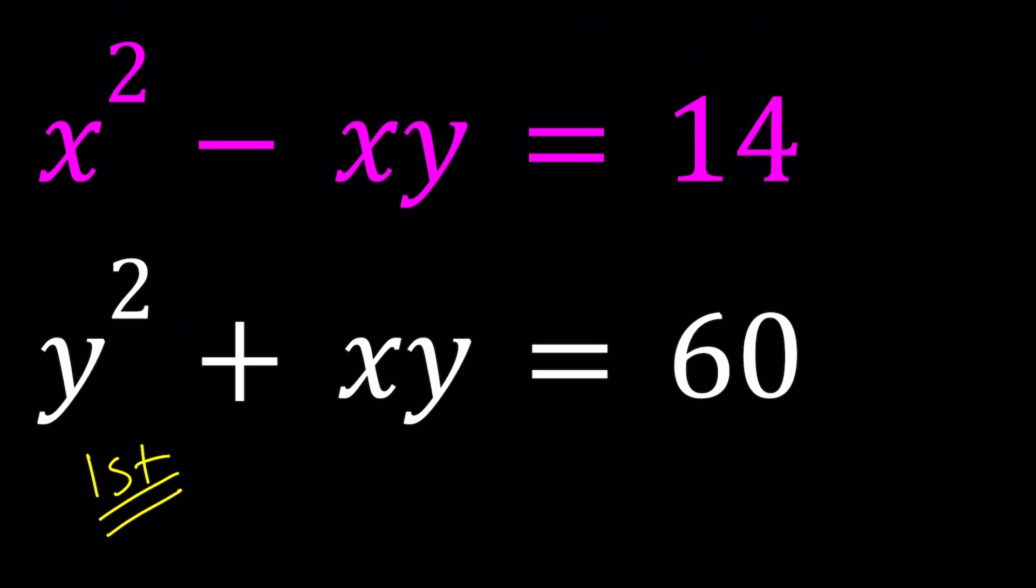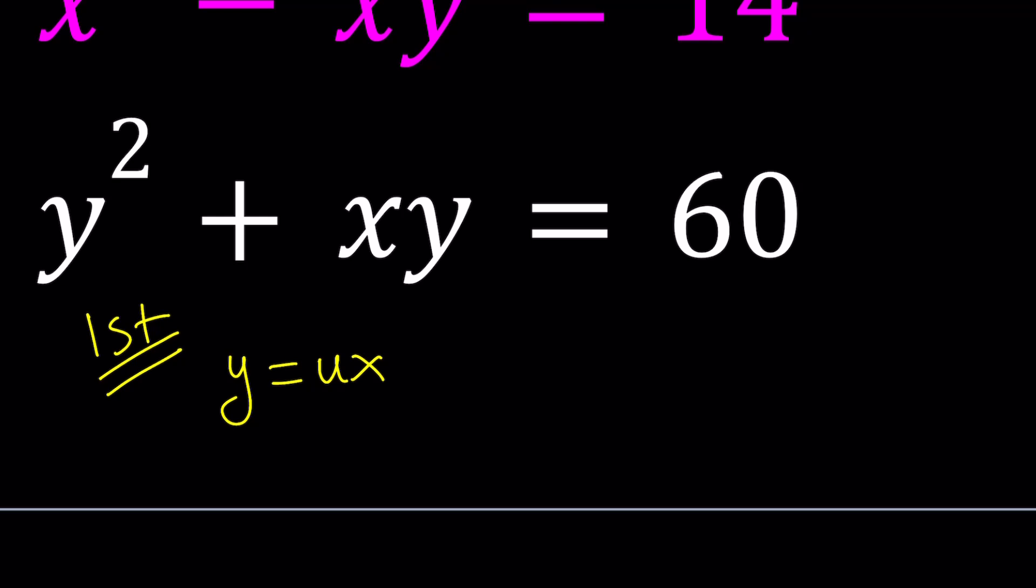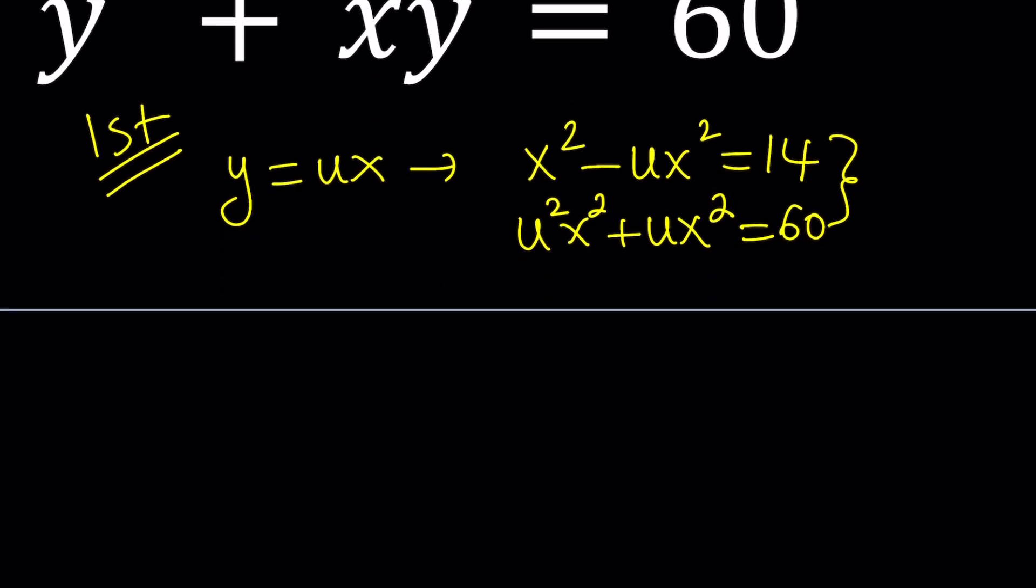When I replace y with ux, I'm getting x squared minus ux squared equals 14. So that gives me a new system with two variables, which is x and u. So we got rid of the y for now.